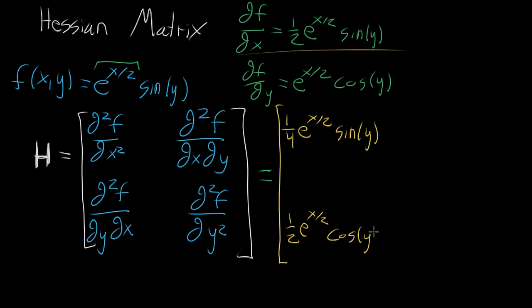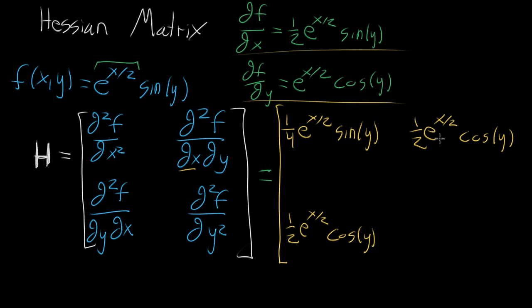The upper right entry, doing it first with respect to y then x: from the y-derivative result, taking the derivative with respect to x brings down the half, giving one half e to the x halves times cosine of y. It shouldn't feel like a surprise that both mixed partial terms turn out to be the same — with most functions that's the case. Technically not all functions; you can come up with some crazy things where it won't be symmetric, but for the most part you can expect them to be equal. The last term, where we do it with respect to y twice: the derivative of cosine is negative sine, giving negative e to the x halves times sine of y.